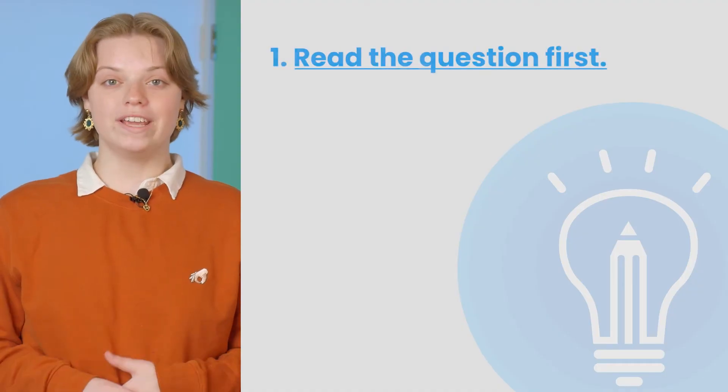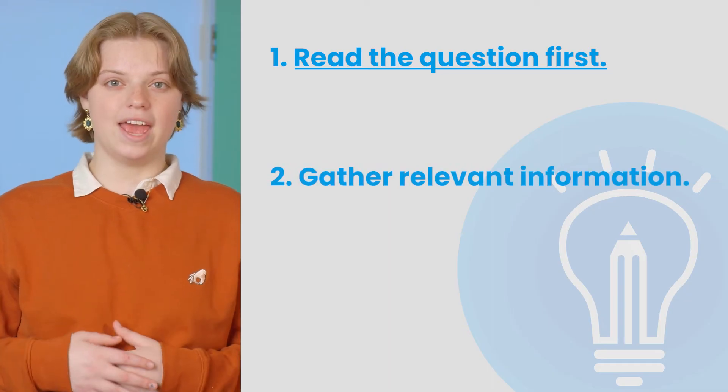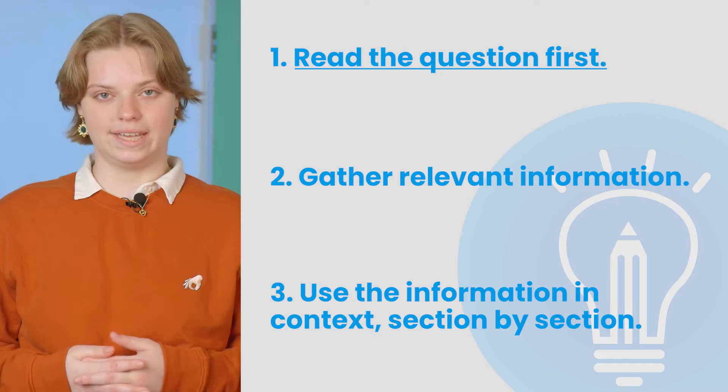Remember when we said biology was content heavy? Sometimes the exam will provide you with a lot of that content. You might get a whole lot of background to a question, and although most of it is necessary for you to write a good answer, it's easy to get overwhelmed and forget which bits are the most important to get you the best grade possible. Here's a simple process to break down a big question. Step one: read the question first. Step two: gather relevant information. And step three: use this information in context, section by section. Reading the question first is especially important — if you're provided with a scary-looking diagram or a big paragraph, you might find it difficult to figure out what's relevant. Markers won't be expecting you to just repeat what you've been given; you're going to have to extract and interpret the most important parts. Reading the exam question is going to give you that all-important direction before you delve into the big pieces of information.